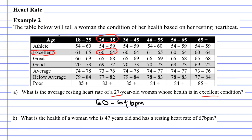Now let's look at question B. What is the health of a woman who is 47 years old — so that means between 46 and 55 years old — and has a resting heart rate of 67 beats per minute? So where does that lie? 67 lies in the range of 66 to 69, so this woman's health is great. We could write something such as: she is in great health.